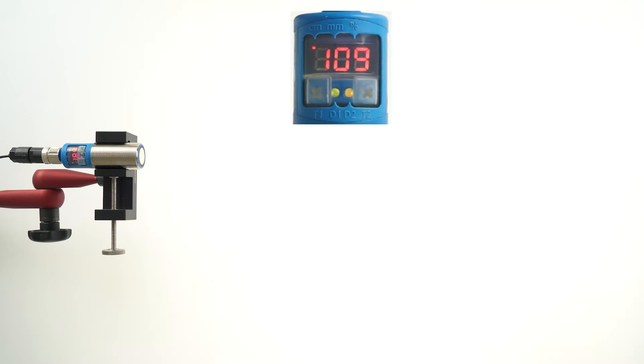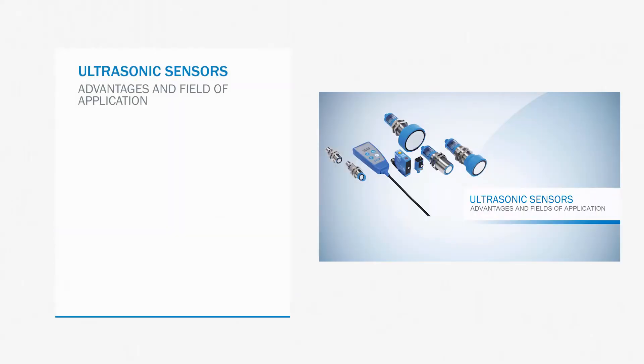The ultrasonic transducer emits a sound pulse. This sound pulse is reflected by an object. The time from sending to receiving the signal is measured, evaluated, and the distance is calculated based on this time and the speed of sound.